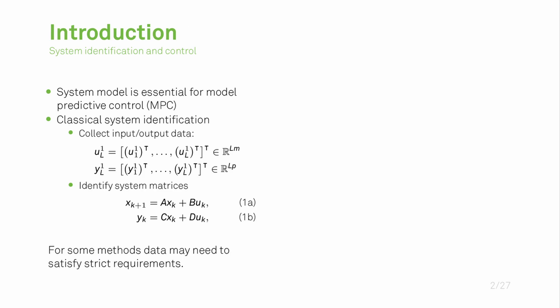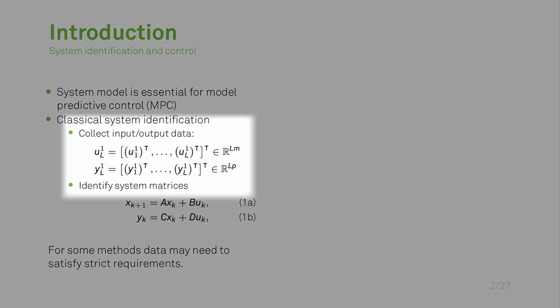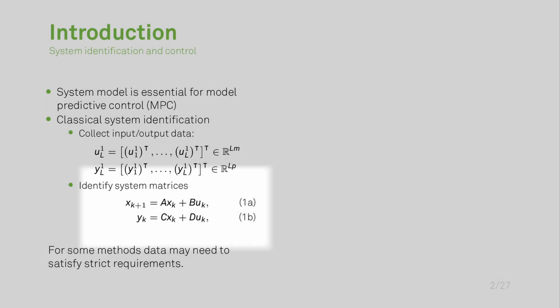What we are dealing with in this project is the common problem of system identification and control. If you want to do model predictive control, one of the most important things to obtain is the system model. If the only thing you have is data, you need to do system identification for which we typically collect input-output data and then in the linear case identify the system matrices A, B, C, D shown here. Sometimes the data for the system identification needs to also satisfy some strict requirements.